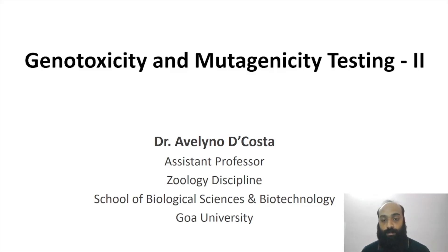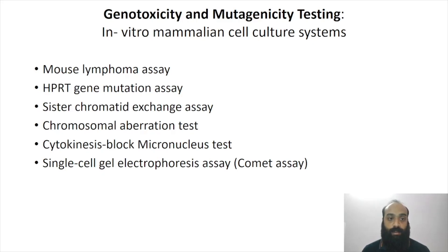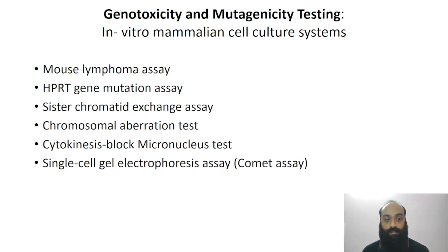In the previous video we spoke about the Ames test and the bacterial reverse mutation assay. In this video I'll be talking about some in vitro mammalian tests such as the mouse lymphoma assay, the HPRT gene mutation assay, the sister chromatid exchange assay, the chromosomal aberration test, the cytokinesis block micronucleus test, and the single cell gel electrophoresis assay.